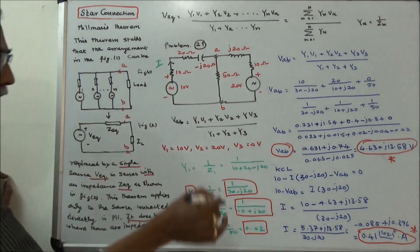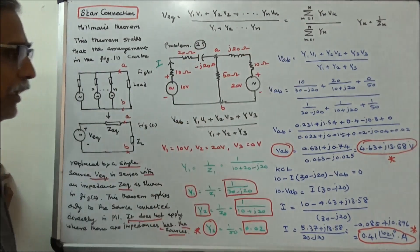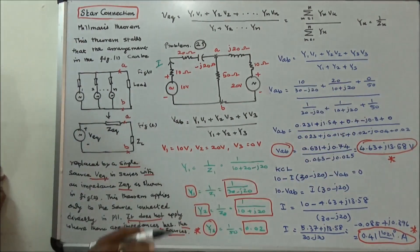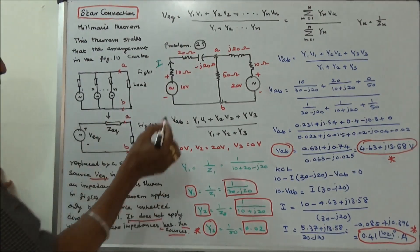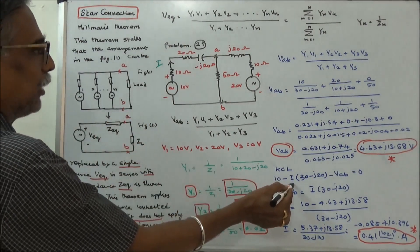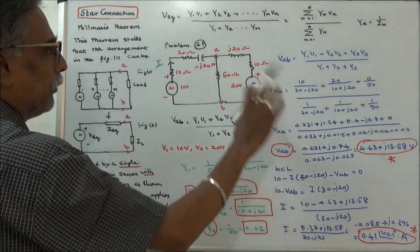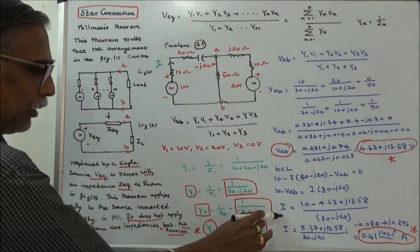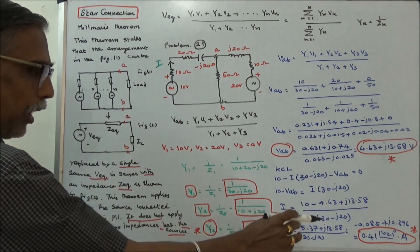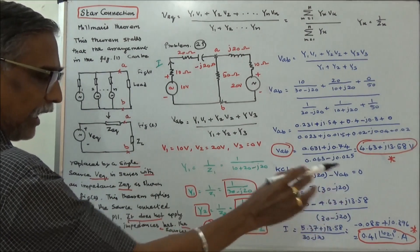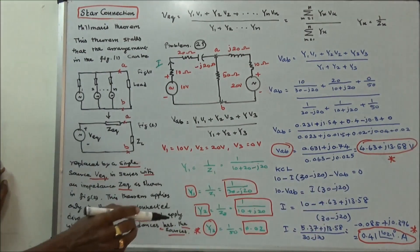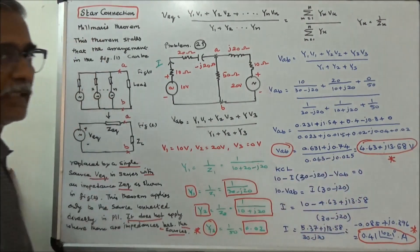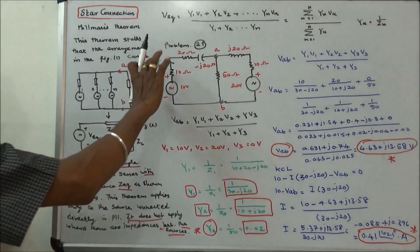Using this formula, Vab is calculated as 4.63 plus J13.58 volts. Applying Kirchhoff's current law: 10 minus i times (30 minus J20) minus Vab equals 0. From this we can calculate the current i.